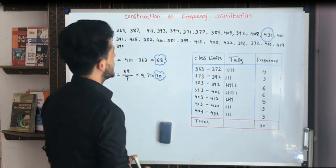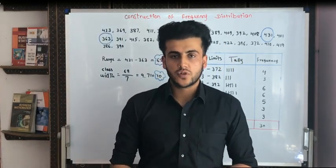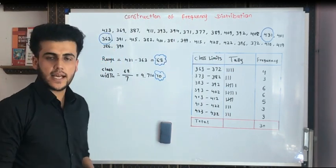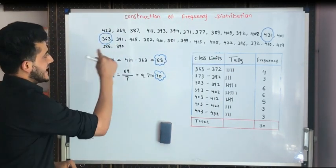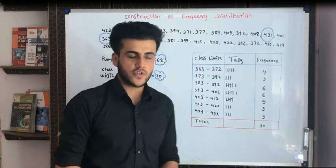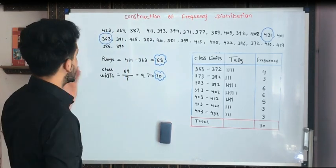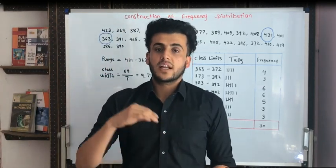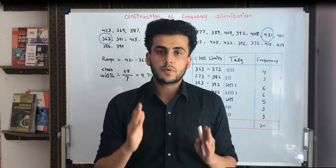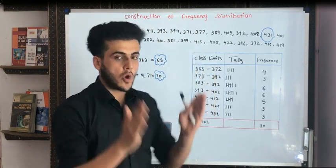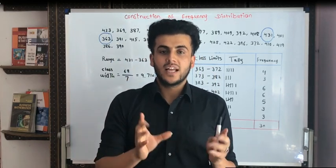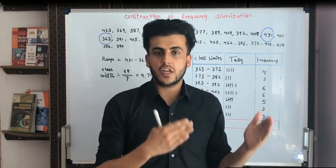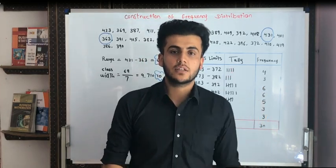Now, coming to the construction of frequency distribution. Construction of frequency distribution is very important. As you are looking, we are having 30 schools. We can have this example for any other purpose, but here we are having 30 schools containing many kinds of numbers. The purpose of classifying this data is to build it into a proper format, so we should know how many people in a survey are included in any type of frequency distribution.